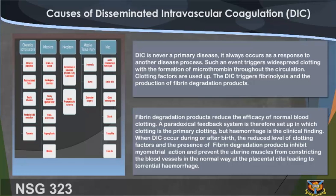When DIC occurs during or after birth, the reduced level of clotting factors and the presence of fibrin degradation products inhibit myometrial action and prevent the uterine muscles from constricting the blood vessels in the normal way at the placenta site, leading to torrential hemorrhage.